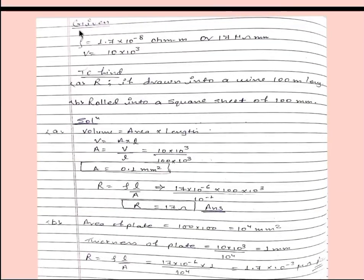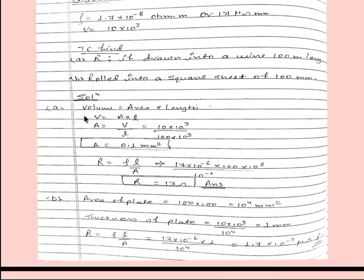First of all we will write what is given in the question. So resistivity is given 1.7 into 10 to the power minus 8 ohm meter or 17 micro ohm mm and volume is equal to 10 into 10 to the power 3. What we have to find is resistance when drawn into a wire 100 mm long and resistance when rolled into a square sheet of 100 mm.